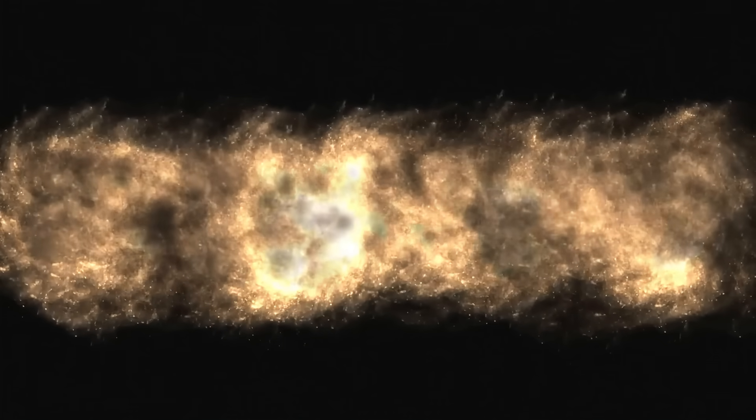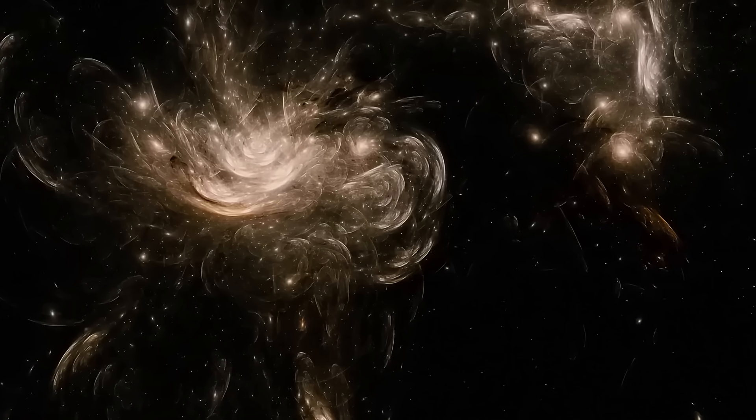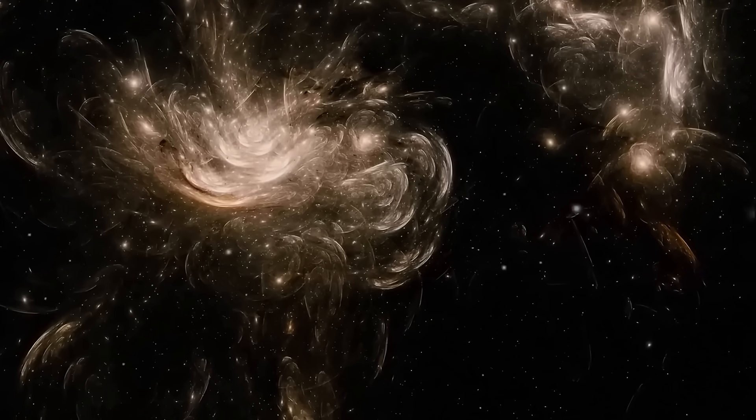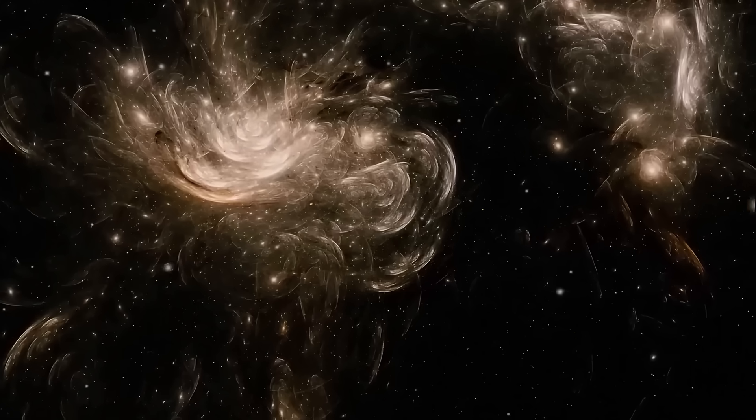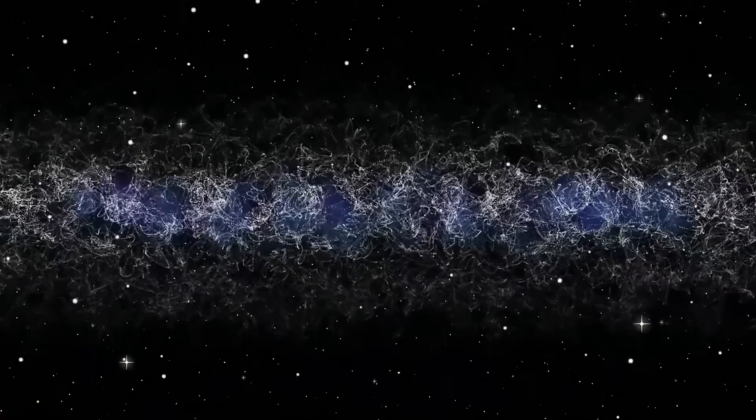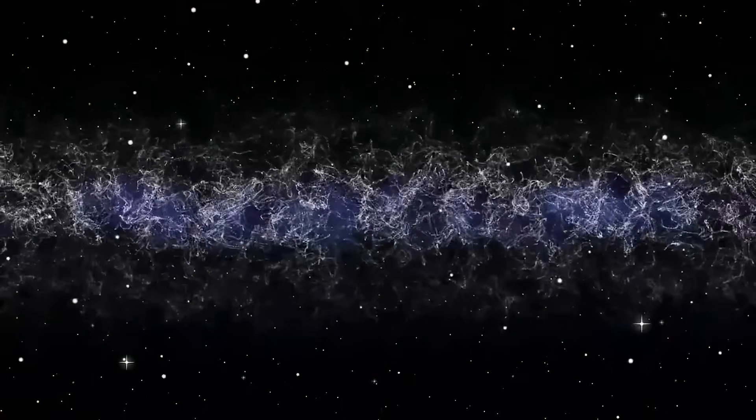To visualize this, imagine if our solar system were reduced to the size of a coin placed on a map of the United States. The entire Milky Way would then span the size of the actual continent. In that vast region, there would be around 300 billion star systems, and we are just one of them, adrift in a sea of unimaginable scale.